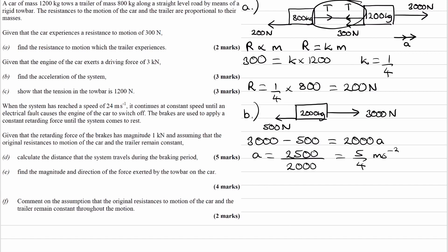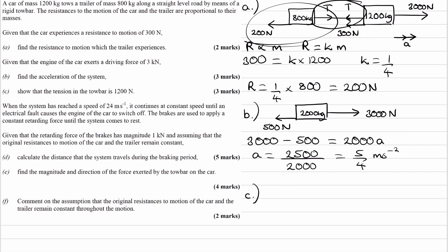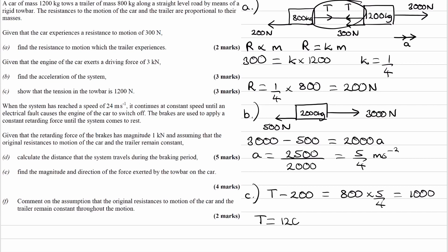Now that we have the acceleration, we can work out the tension. We do have to consider the individual objects separately. The easiest object is the trailer — the 800 kilogram mass — because it only experiences two forces: tension forwards and 200 newtons backwards. So T minus 200 equals 800 times 5 over 4, which equals 1,000. Rearranging, T equals 1,200 newtons.